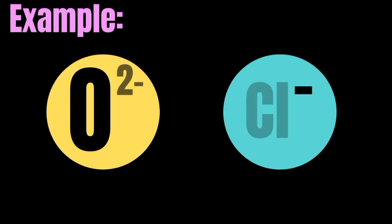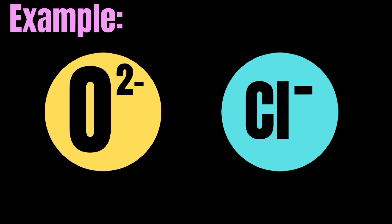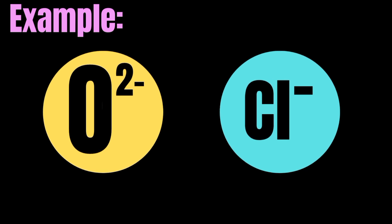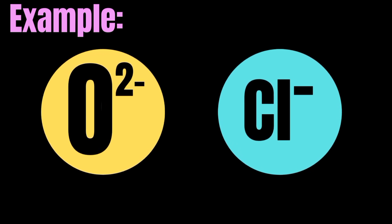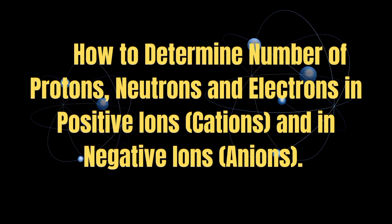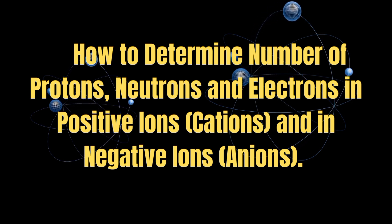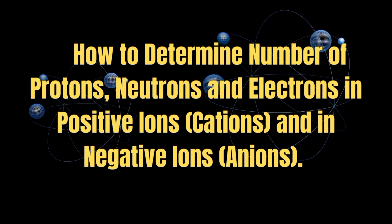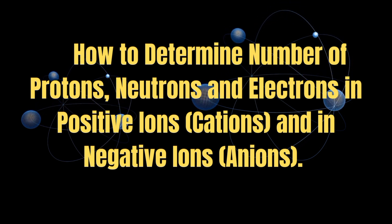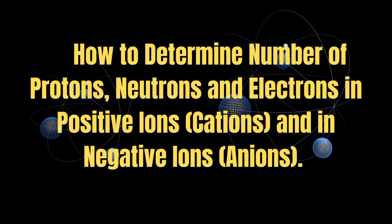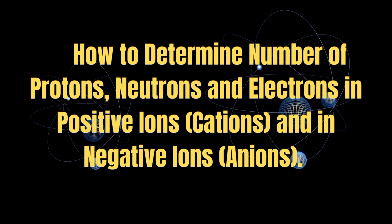Examples include negatively charged oxide and chloride ions. How to determine the number of protons, neutrons, and electrons in positive ions and in negative ions.